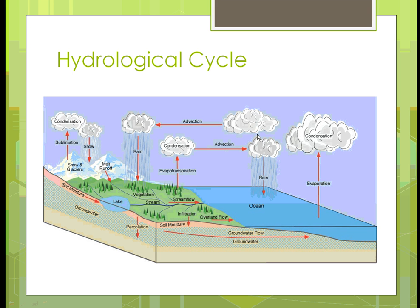Once the vapor gets heavy enough, it turns into droplets and comes down as rain. The rain shown in the diagram is a cyclical process — it pulls moisture up from the ocean and returns it to the ocean, so there isn't much net loss of water overall.